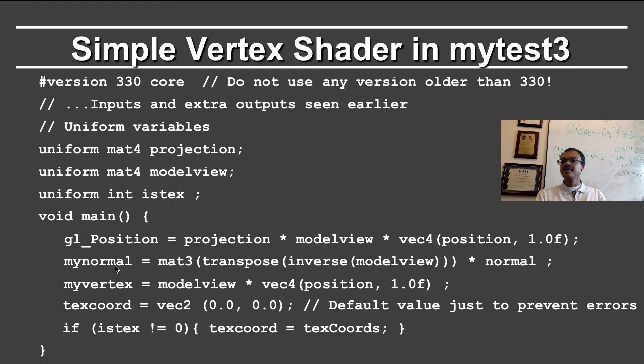We also define the normal, which will be used in the fragment shader. This simply applies the normal transformation. Note that the normal transformation is given by the inverse transpose of the model view matrix, which is why we are doing transpose inverse model view times the normal. We define the vertex location in eye coordinates in the 3D world. This is different from glPosition, which applies the projection matrix and tells you where it goes in the screen or in normalized device coordinates.